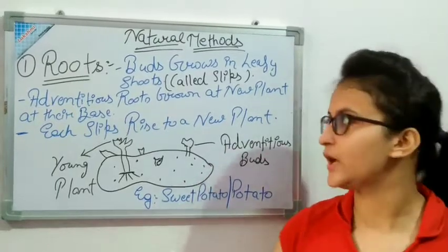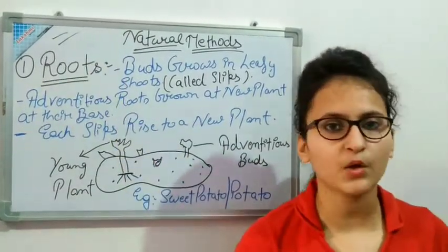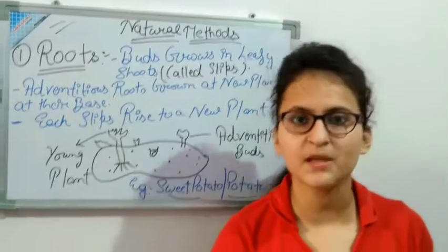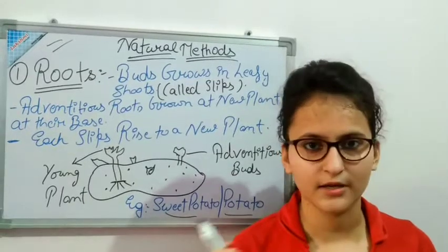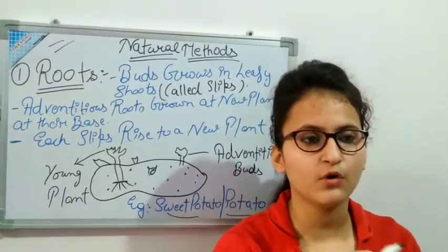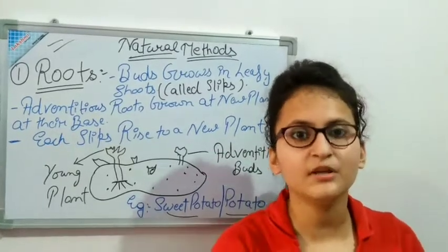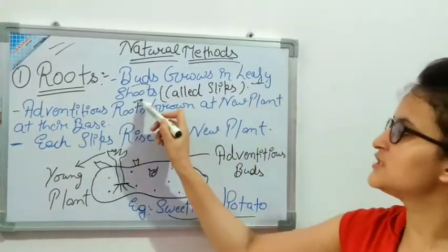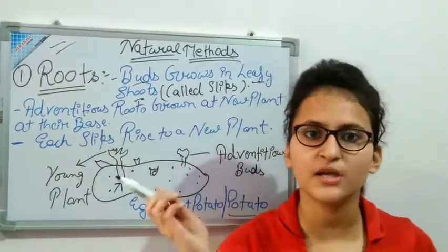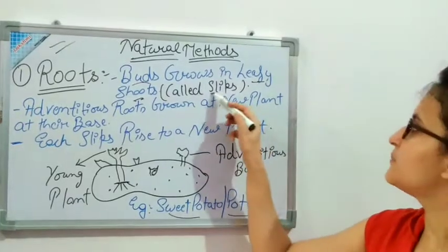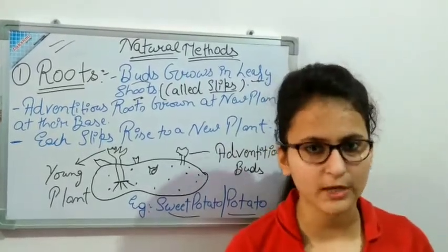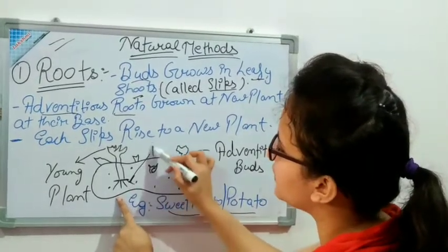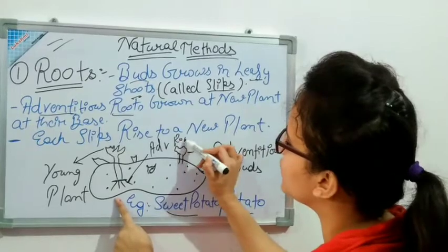Now I will tell you about roots. You all know what roots are. I will tell you about sweet potato and potato. Sweet potato and potato have buds; they start growing into a plant. Birds grow in leafy shoots and we call these slips in biological language. What are adventitious roots? These are extra roots that start growing from the base of the leaves.